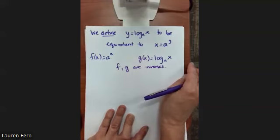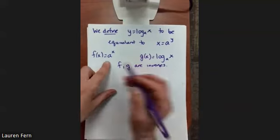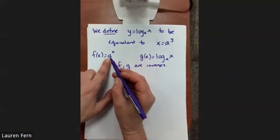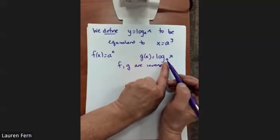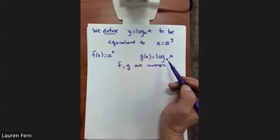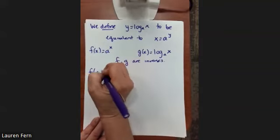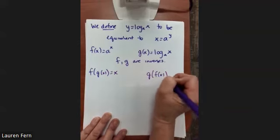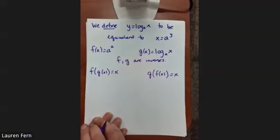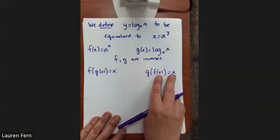Now we're going to practice getting used to this notation because it is really funky. Notice in my function f, a is the base of my exponent; in the inverse, a is called the base of our logarithm. Since these are inverses, f(g(x)) = x and g(f(x)) = x — because when you do the composition of inverse functions, you get back what you started with.